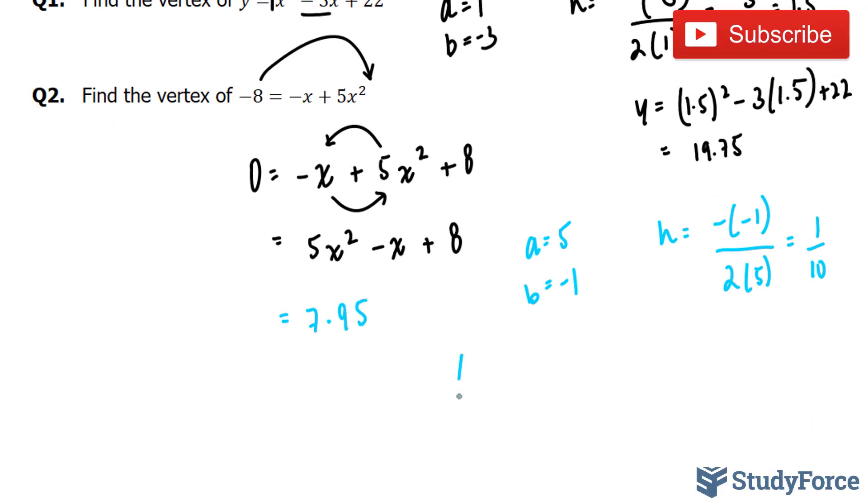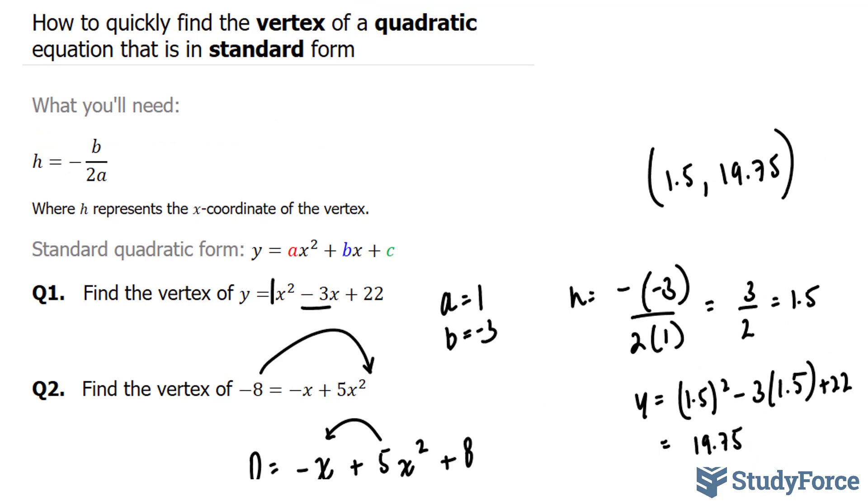So therefore, our vertex is at 1 over 10 and 7.95 for the y coordinate. And there you have it. That is how to quickly find the vertex of any quadratic equation that is in standard form.